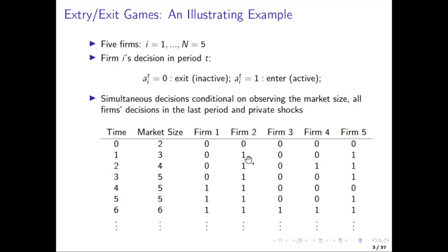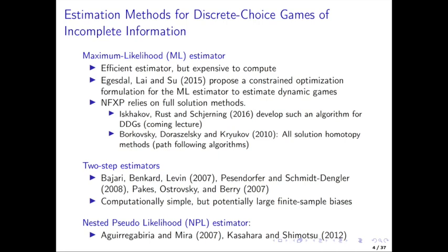Aguirregabiria and Mira are trying to estimate what those entry costs are. If there are big costs or low profits associated with being in the market, then there will be fewer firms in the market. The firms are looking at the other firms, making decisions and being forward looking — taking into account that if you enter today, you also think about being there tomorrow, and repeatedly paying these fixed costs of entry. So we want to try to see if we can estimate models of this kind of dynamic discrete choices.